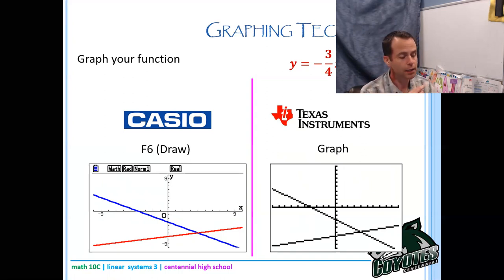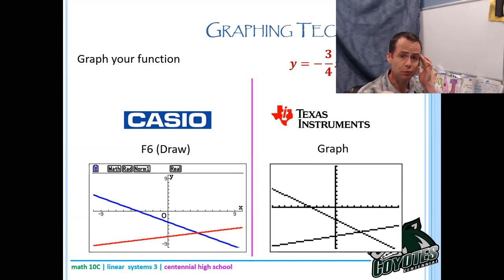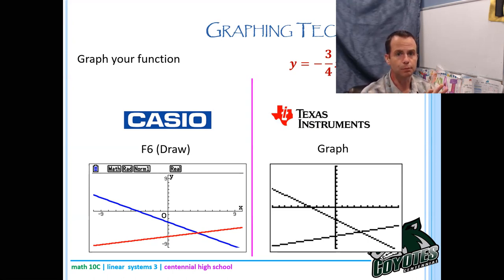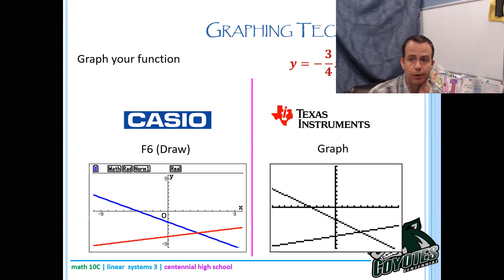For Casio kids: if you're looking at the picture, press F3 F3 and it will put you into a standard window, then Exit and Draw again. For TI kids: press Zoom then the number 6 to get a standard window. Casio caution: only do F3 F3 when you're looking at the picture — not when you're looking at the equation screen — or it will mess things up.